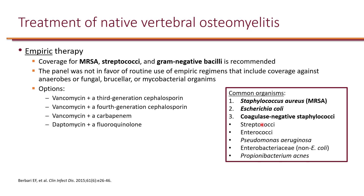Options recommended include vancomycin plus a third-generation cephalosporin. Vancomycin covers MRSA as well as streptococci, and a third-generation cephalosporin such as ceftriaxone covers gram-negative bacilli as well as streptococci. If the third-generation cephalosporin is ceftazidime, it covers pseudomonas, whereas ceftriaxone does not. If the patient does not have a risk factor for pseudomonas, it's not necessary to cover it. If pseudomonas infection is suspected, vancomycin plus a fourth-generation cephalosporin like cefepime would be recommended.